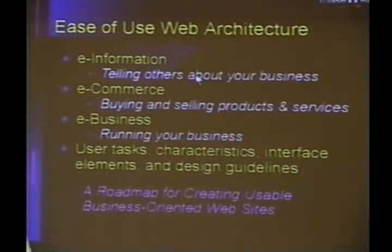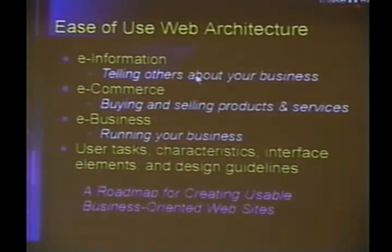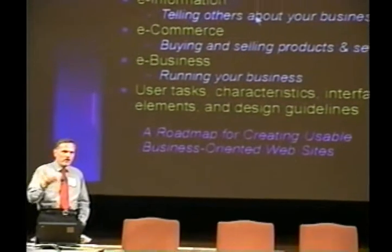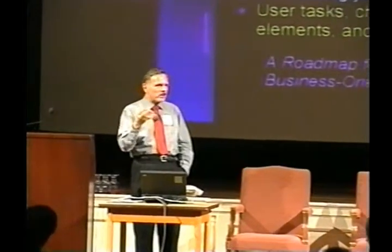The architecture we are developing is layered into three sets of tasks. The first is the e-information task — doing enough to tell others about your business using the web. When we add the ability to do buying and selling transactions — shopping cart, transaction process, purchase and fulfillment, confirmation — we call that the e-commerce level of enablement. Finally, over time, we'll grow this architecture to describe the entire e-business process — relationships with vendors, suppliers, employees, and customers — creating a full roadmap for usable, business-oriented websites.